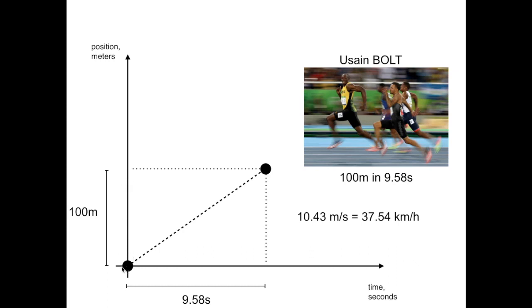Dividing the change in space, the delta space of 100 meters, by the difference in time, 9.58 seconds.